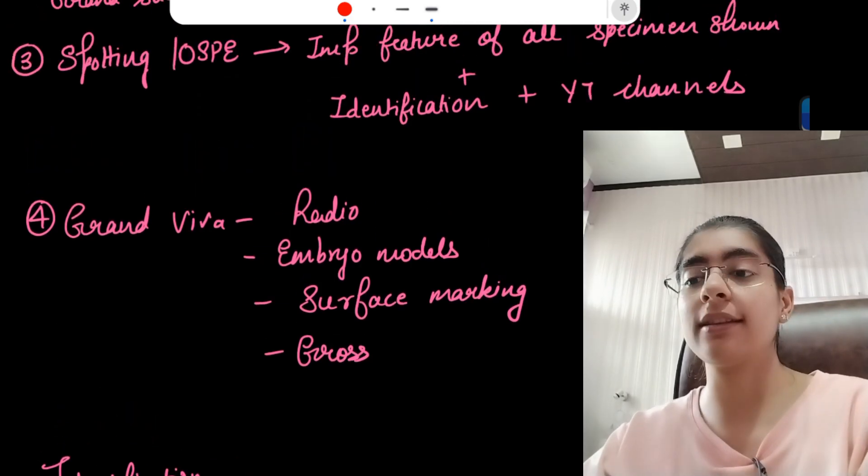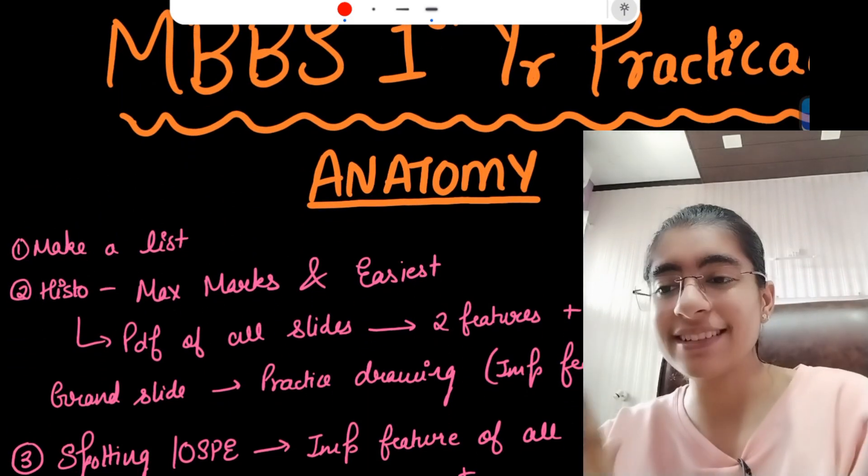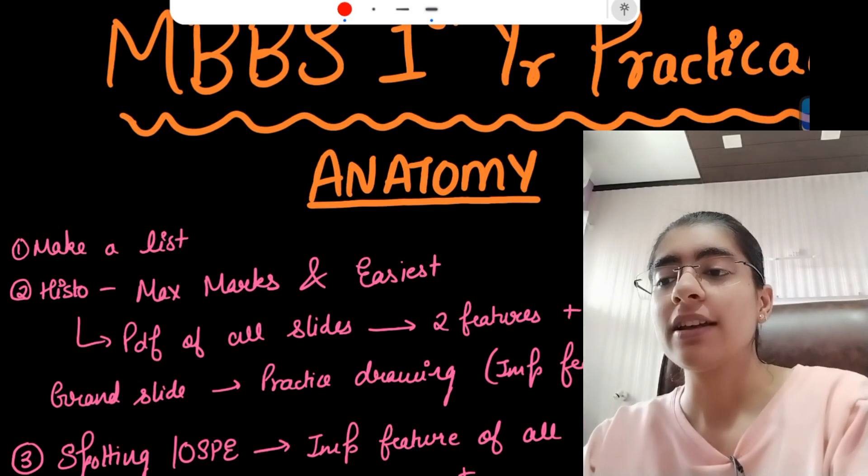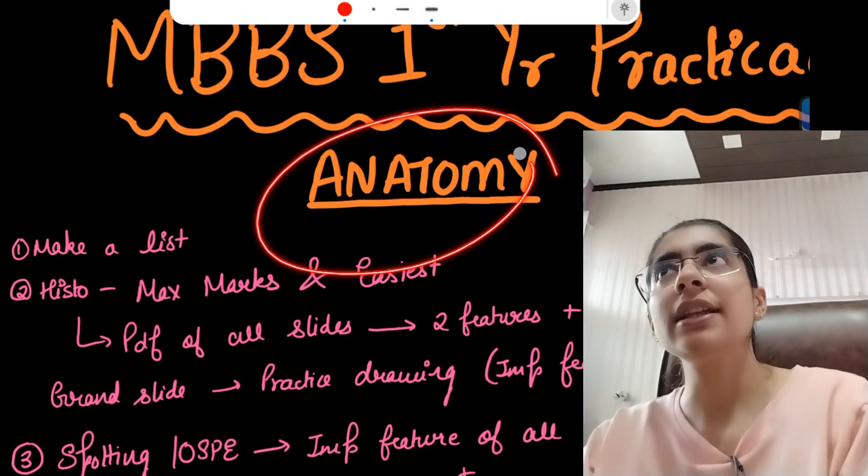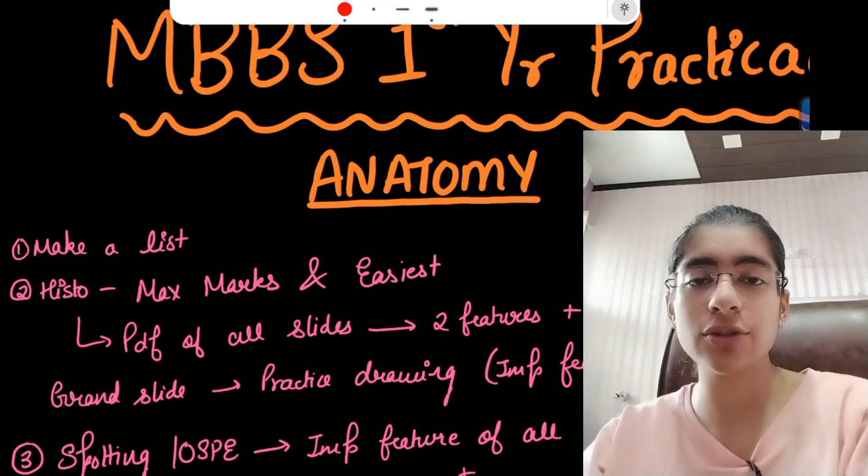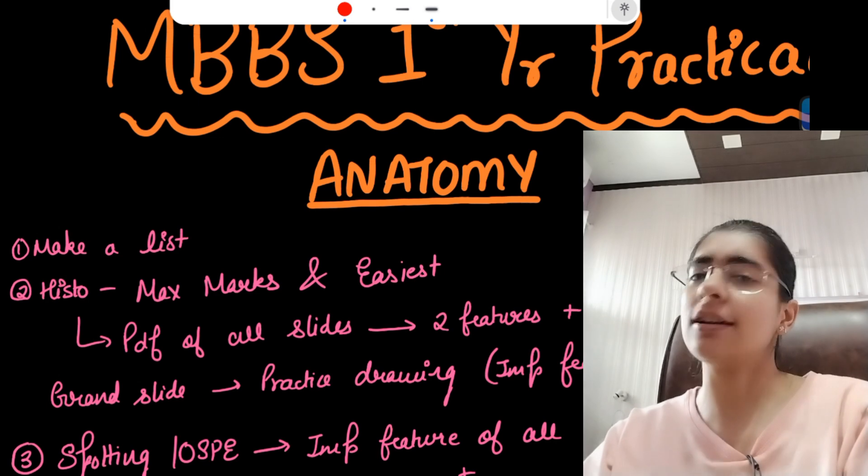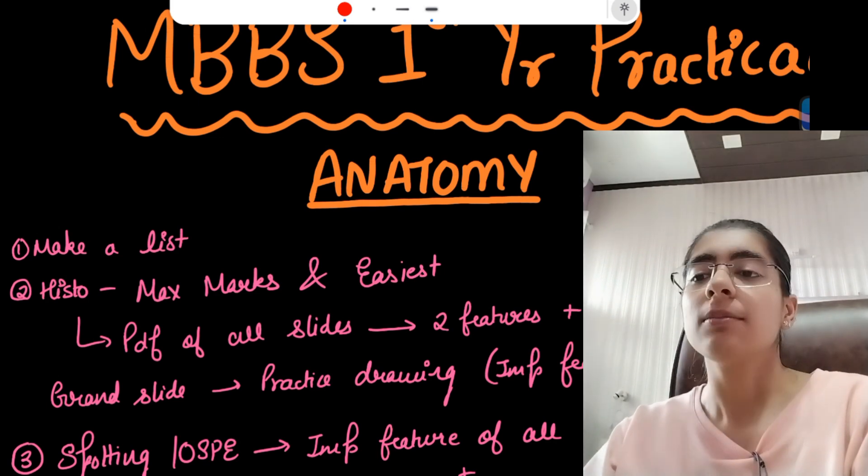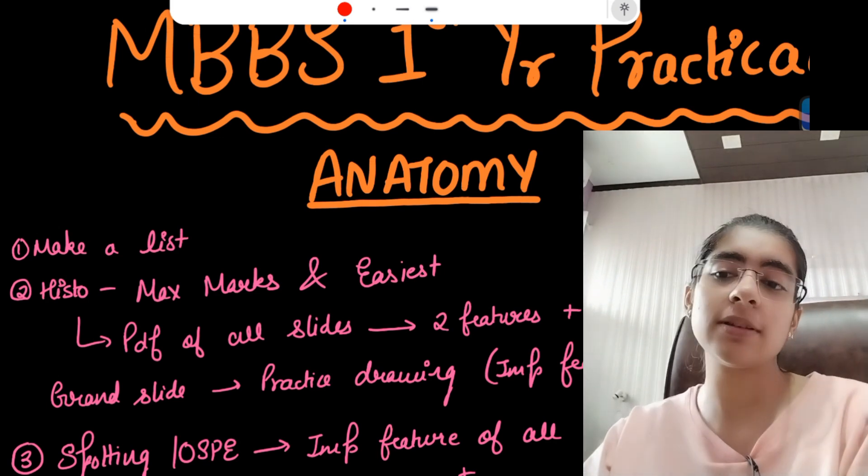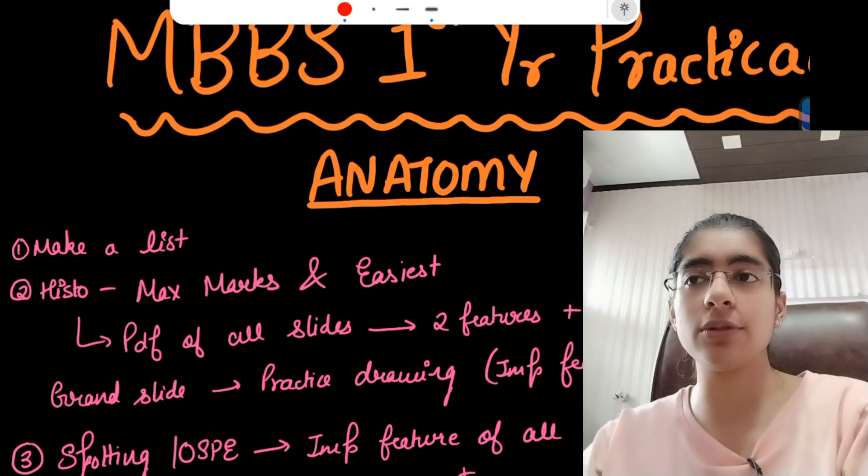This was all about gross anatomy practicals. But yes, two additional points: in anatomy practical you need to ensure that you take your own forceps, your brush, the paintbrush kind of thing, along with you. These, under gloves and all we all know, but the forceps and the brush are the main things which you should have when you are going to give your anatomy practical viva.